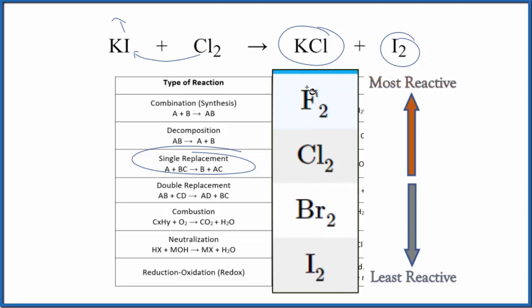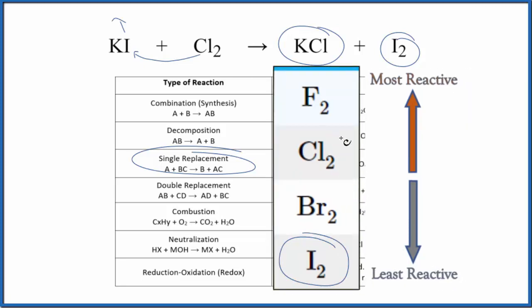So if we look at the series here, we can see here's our iodine. It's way at the bottom, it's the least reactive. And then chlorine, it's towards the top, it's more reactive. So since chlorine is higher up on our activity series, it's more reactive than the iodine, the chlorine will be active enough to push the iodine out. So this reaction will happen.